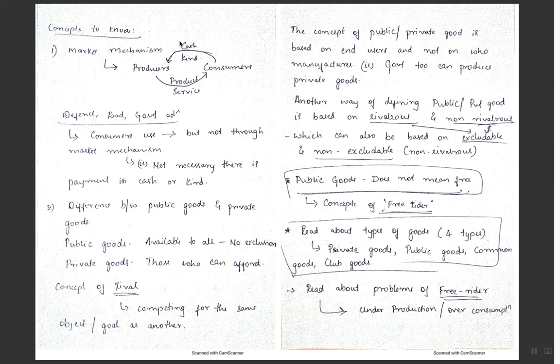Market intervention could be subsidies, taxes, or various other provisions given by the government which alter the price of the product. Here we are discussing a simple economy where there is a producer, there is a consumer, and they have interaction between the two. Now let's bring in the concept of government, but before that let's see the difference between public goods and private goods.